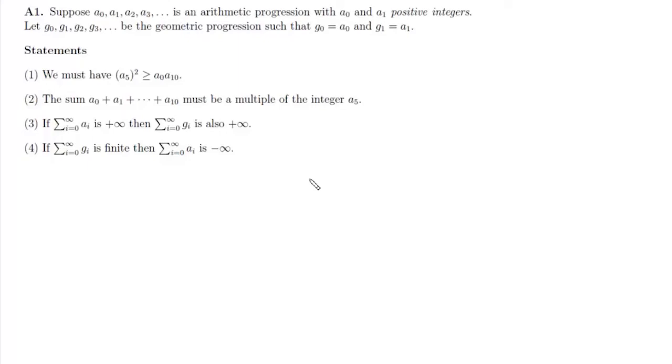Today we will discuss CMI's 2022 paper which was conducted on 22nd May. The first question is: suppose a0, a1, a2, a3 be an arithmetic progression with a0 and a1 positive integers, and let g0, g1, g2 be a geometric progression such that g0 equals a0 and g1 equals a1. Then which of the following statements are correct?